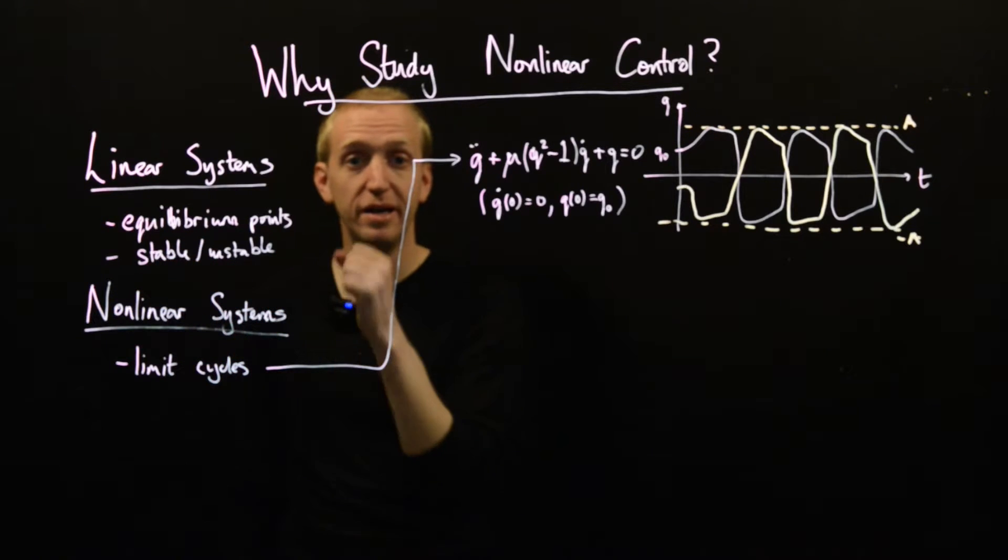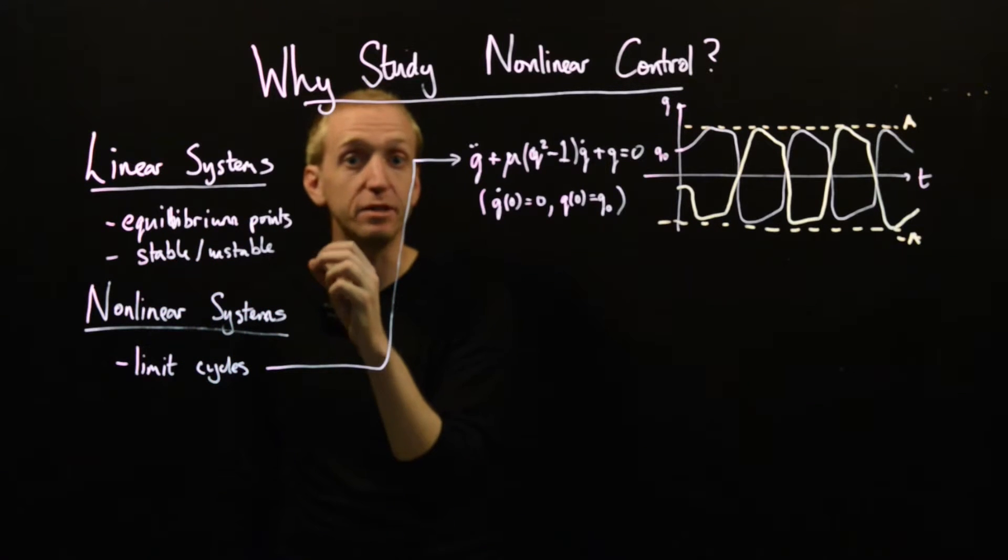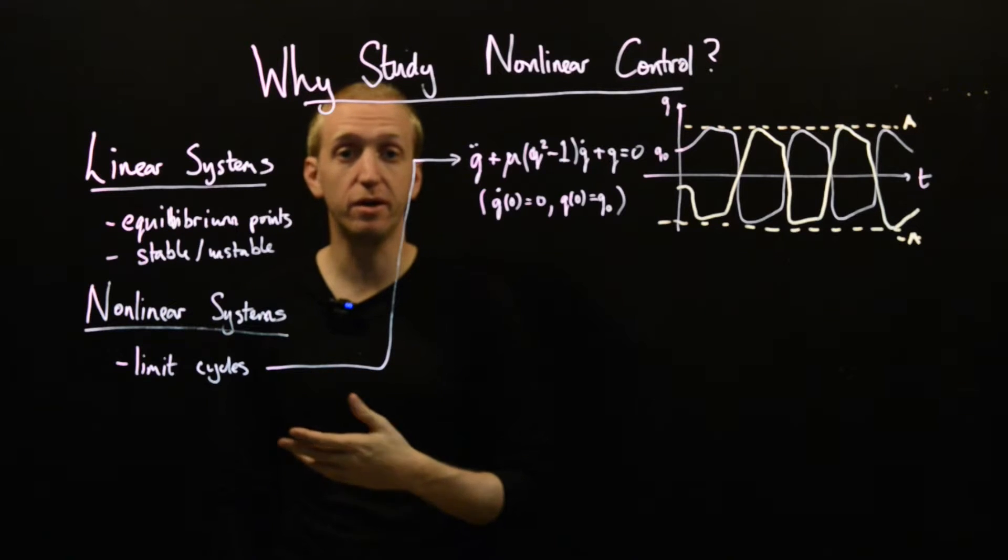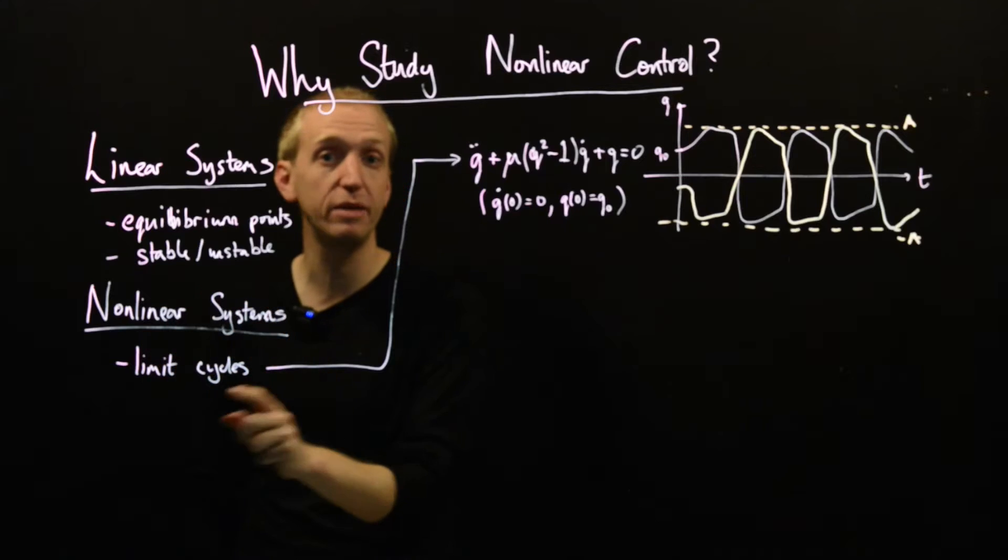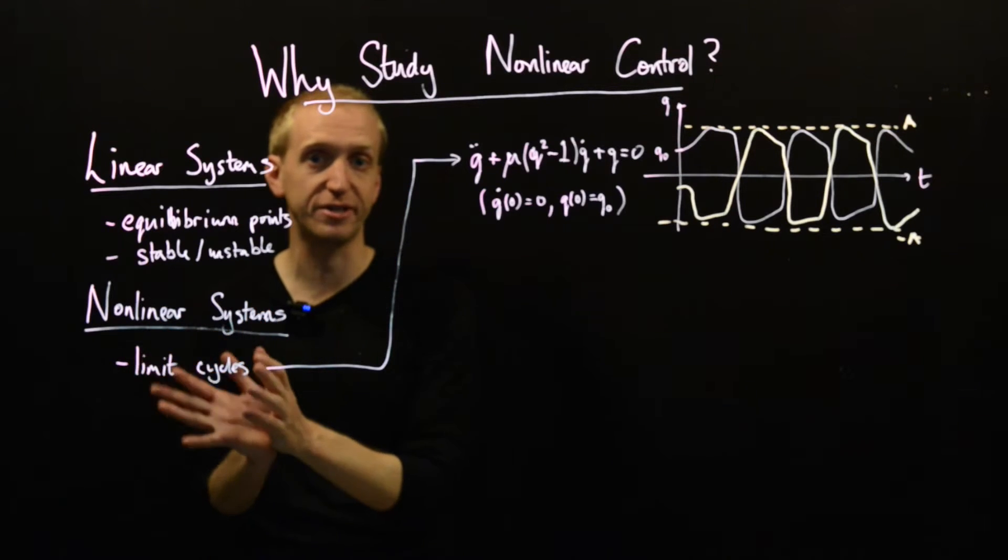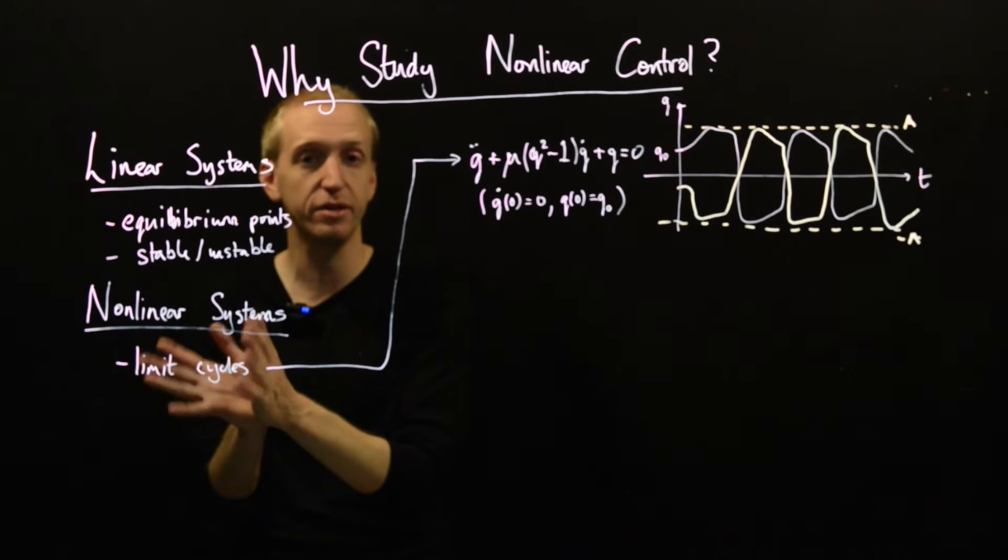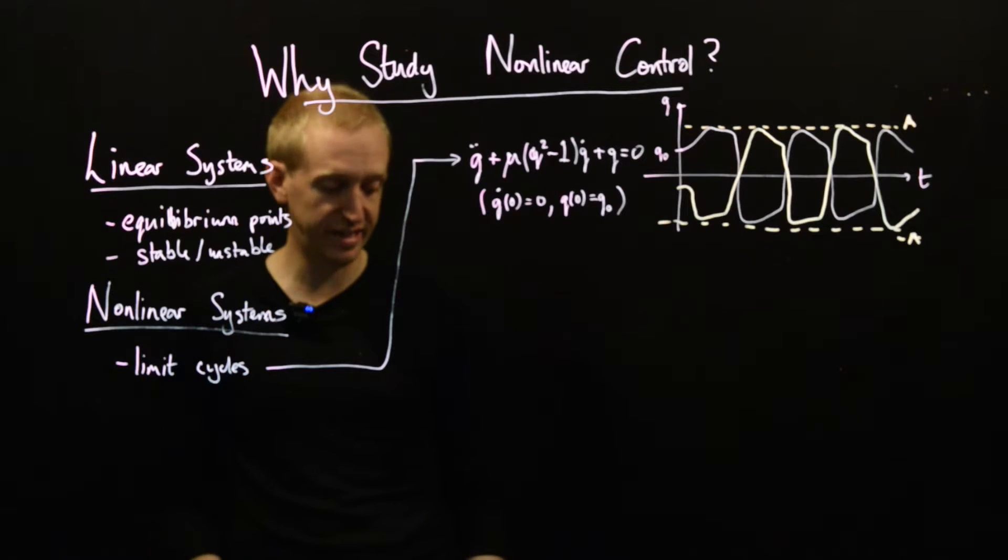And this is a property that cannot be described by linear systems. Linear systems just describe points, equilibrium points and behaviour around those points. The natural behaviour of your heart isn't a point. It's this periodic behaviour and this is exactly what a limit cycle is. So, this is our first kind of fundamentally non-linear behaviour that we'll be investigating through the course.